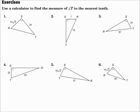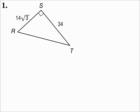Use a calculator to find the measure of angle T to the nearest tenth. We're working in a triangle. To find the measure of angle T, I need to identify what sides are opposite, adjacent, or hypotenuse. The side across from angle T is opposite, and the leg next to angle T is adjacent.